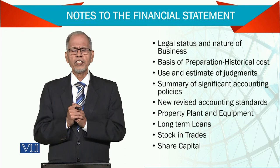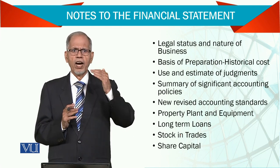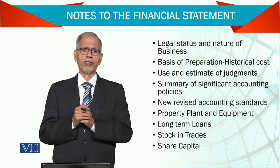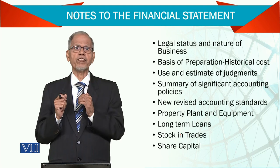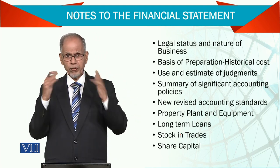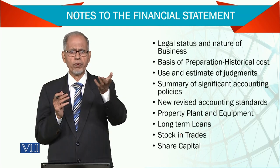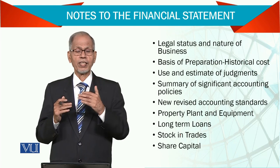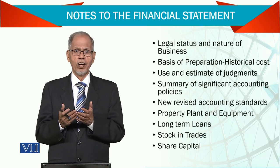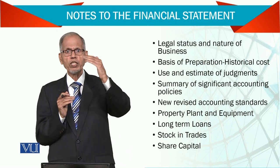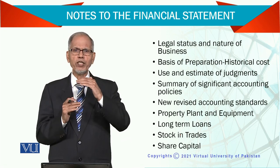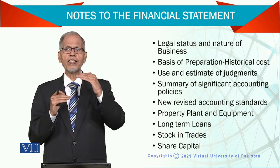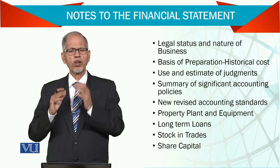In the share capital note, we give details of how many shares have been issued, how much is the authorized capital, how many have been issued, and to whom. A detail of the shareholder pattern will be given — for instance, if insurance companies or banks have bought some shares, you have to mention how these shares are allocated. You also have to mention the capacity of your business — your rated capacity and what percentage you actually achieved: 90%, 95%, or maybe 100%. All of this is in the shape of notes.